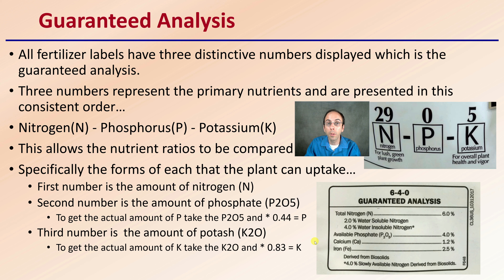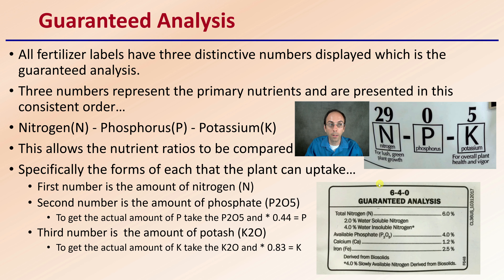Because growers are typically looking at what's plant available, this is why nutrients are presented in these forms. You will also notice the guaranteed analysis lists water-soluble nitrogen with water-insoluble nitrogen. That 4% of water-insoluble nitrogen is slowly available nitrogen, derived in this example from biosolids.